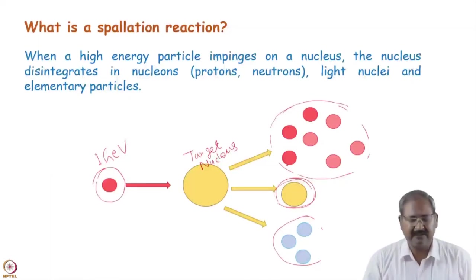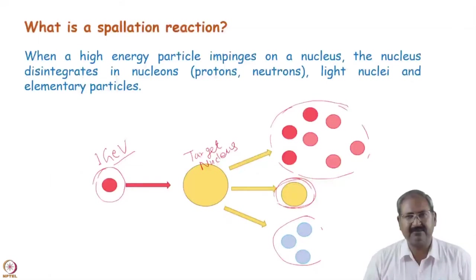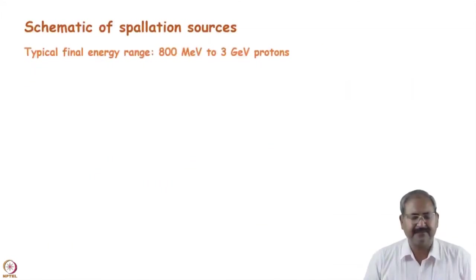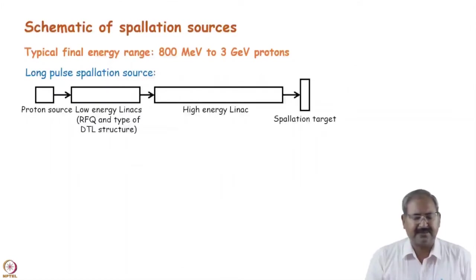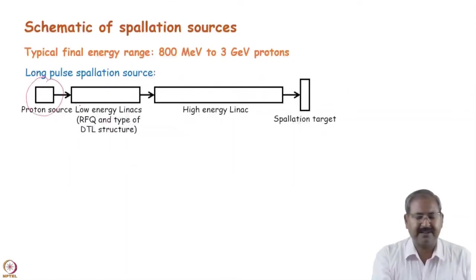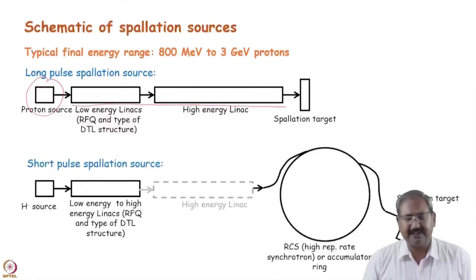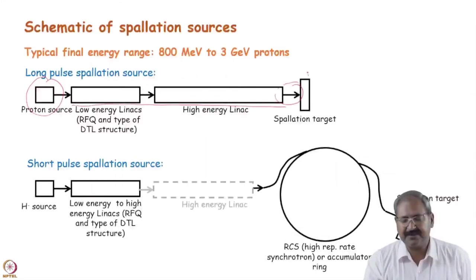If the target is suitably built, a 1 GeV proton can eject 20 to 30 neutrons. So we can get a high flux of neutrons by this kind of source. These sources are made using the accelerator as follows: first we have a proton source, then a linear accelerator which accelerates the protons up to the desired energy level, and then these protons hit the target.